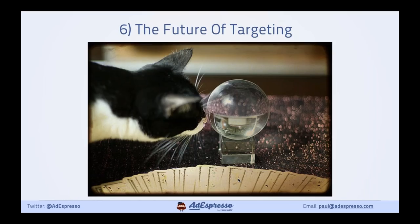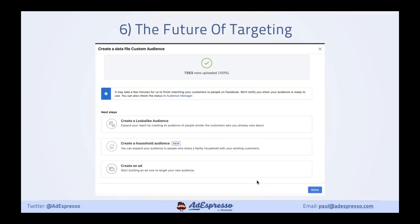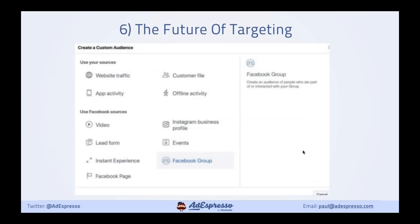Let's finish up with a quick look at the future of targeting on Facebook. Something I saw in Business Manager just this week: when I uploaded a customer file, there's now a 'create a household audience' option. Basically, Facebook can find people that are in the same household as your custom audience. However, it's not working at the moment — Facebook says they're working on it. They actually announced this two years ago and it's taken a long time to roll out. So hopefully that's coming — keep an eye on that.